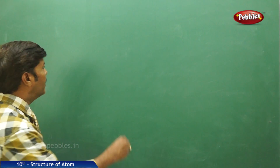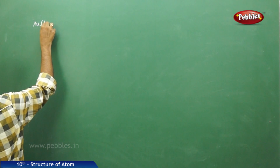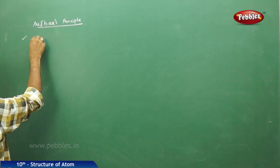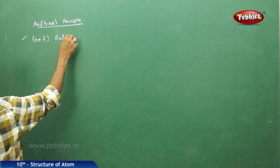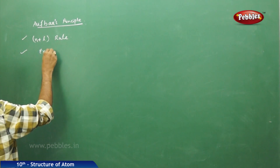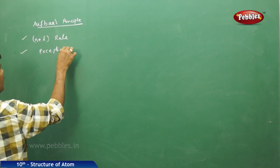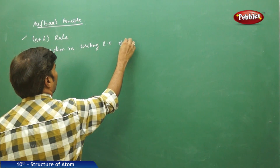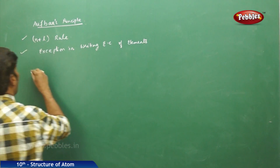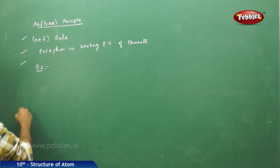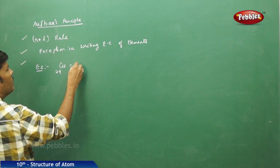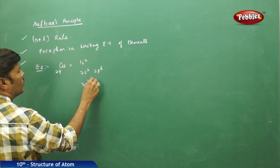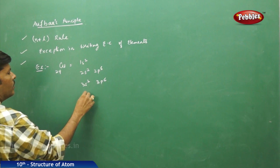The Aufbau principle, also called the half-bus principle, involves obeying the n plus l rule. When applying this rule, there are some exceptions in writing electronic configurations. For example, take copper whose atomic number is 29. You write 1s2, 2s2, 2p6, 3s2, 3p6, 4s2.